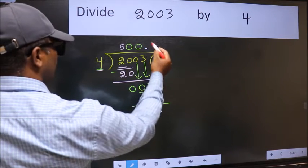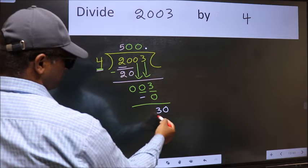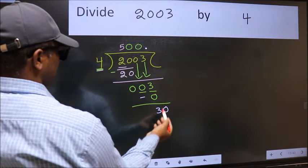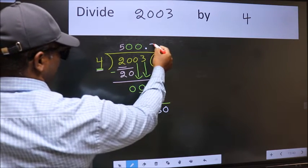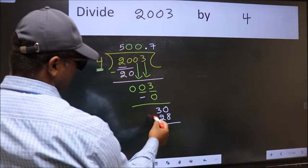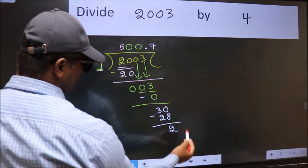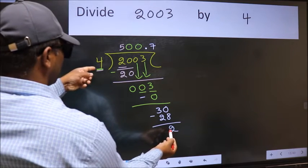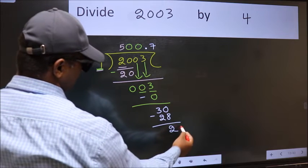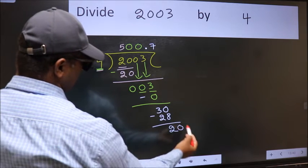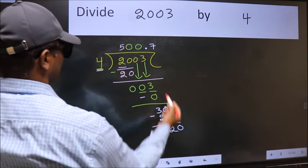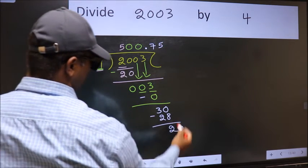So now we can put dot and take 0. So we have 30. A number close to 30 in the 4 table is 4 sevens are 28. Now we should subtract — we get 2. 2 is smaller than 4, and we already have the decimal, so directly take 0. So we have 20. When do we get 20 in the 4 table? 4 fives are 20.